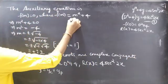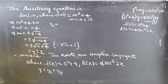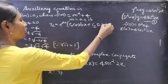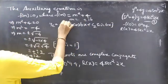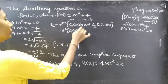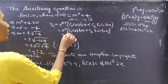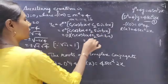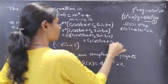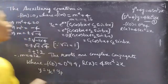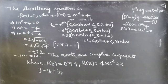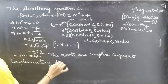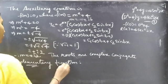We know that when m equals a plus or minus ib, the complementary function yc is given by e to the power ax times c1 cos bx plus c2 sin bx. In our case a equals zero, so e to the power zero is one. Therefore yc equals c1 cos bx plus c2 sin bx. Now let's write the complementary function using this formula.